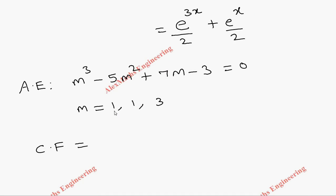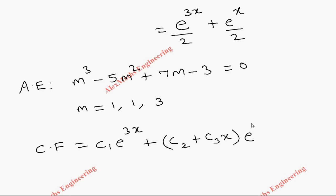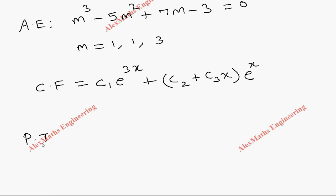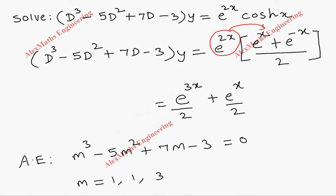The complementary function has two equal values (m=1,1) and one different value (m=3). So CF = c₁e^(3x) + (c₂ + c₃x)e^x. All values are real, giving us the complementary function.